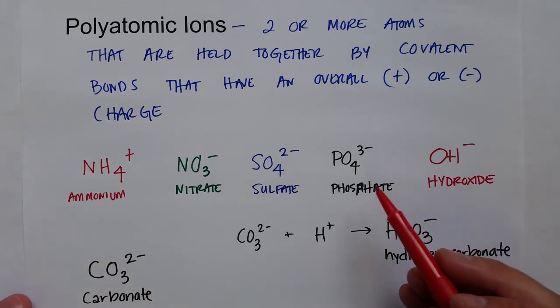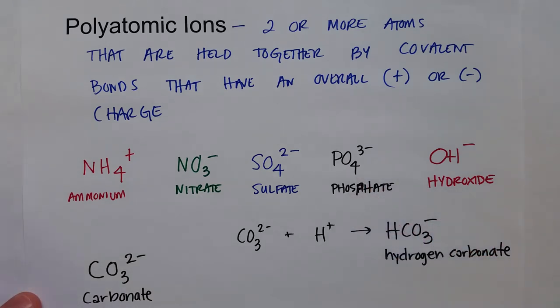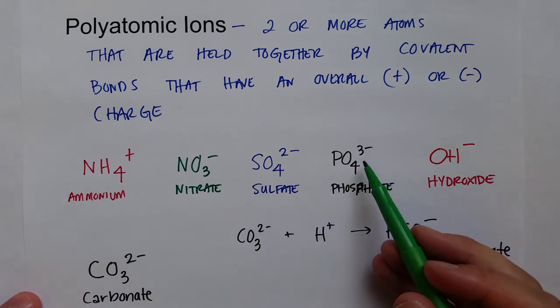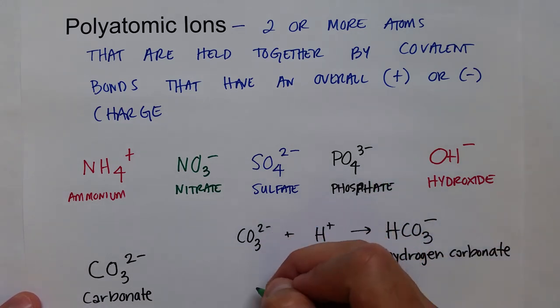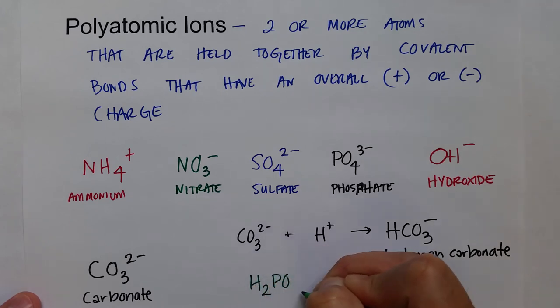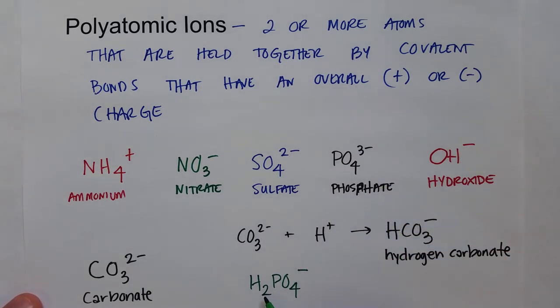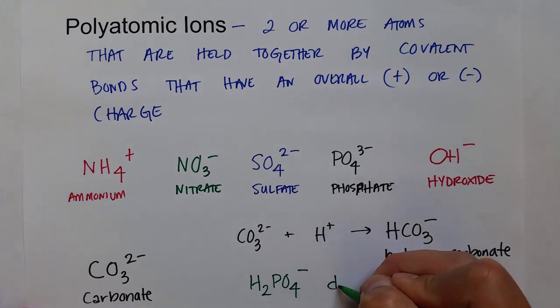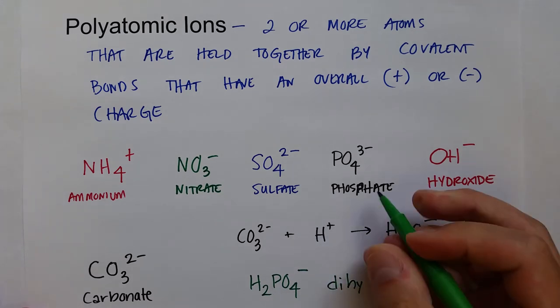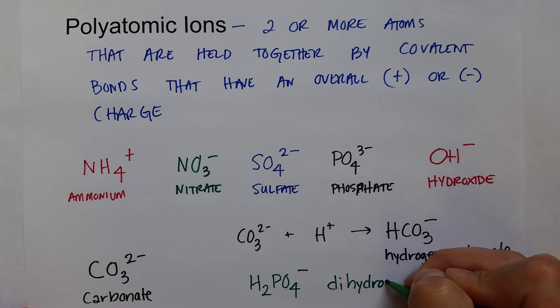You can even gain more than one hydrogen on some of these polyatomic ions. So, phosphate with a negative three can actually gain two hydrogens that go all the way up to H2PO4 minus one. And since that has two hydrogens, we name this dihydrogen. Use the prefix di- to show that there are two hydrogens on this phosphate.